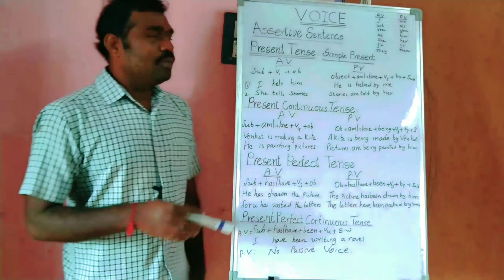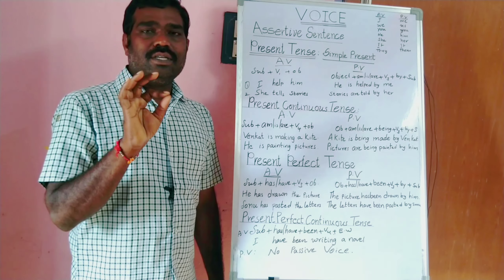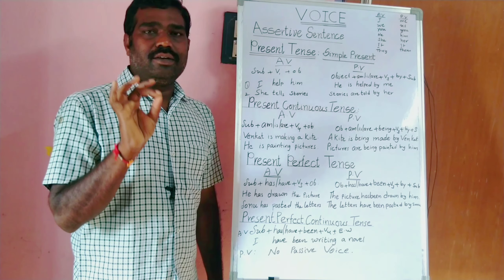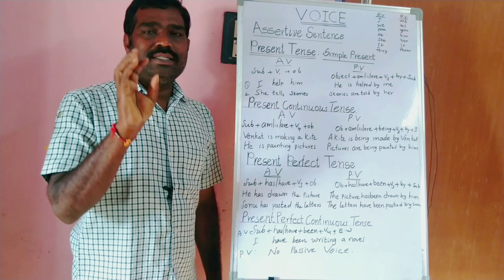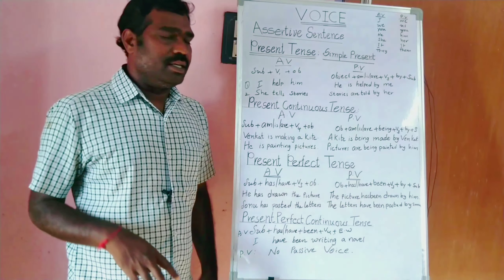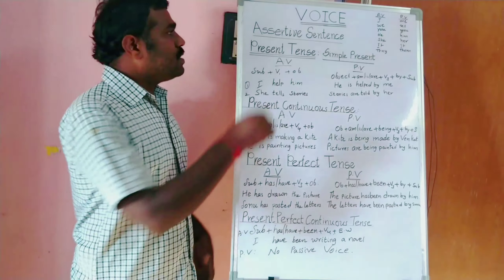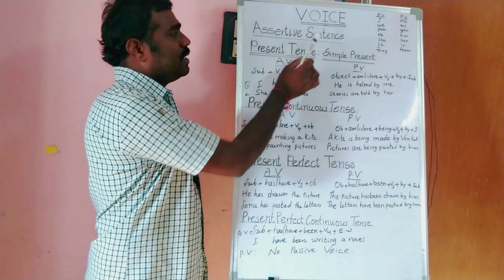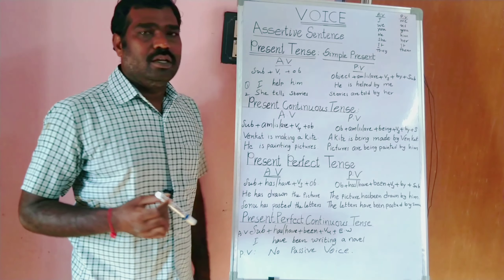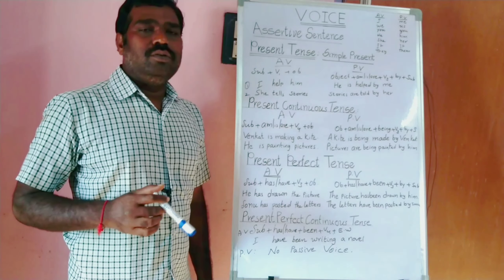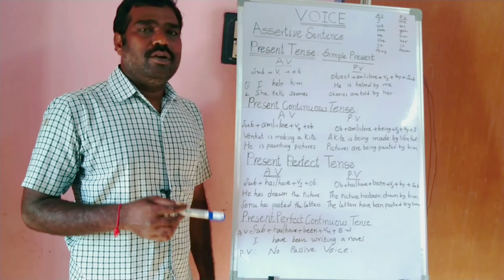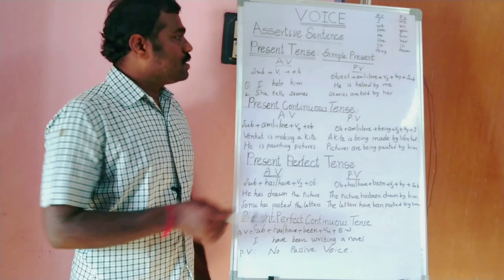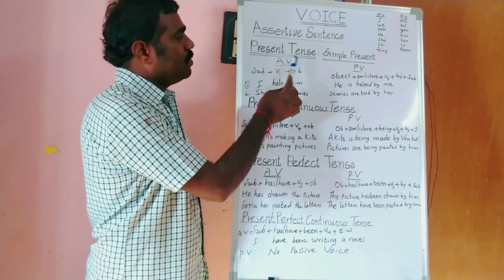We have four sentence types: assertive sentence, interactive sentence, imperative sentence, and exclamatory sentence. Now first one — assertive sentence ngu guri nchi. In active and passive voice, we will discuss the assertive sentence.